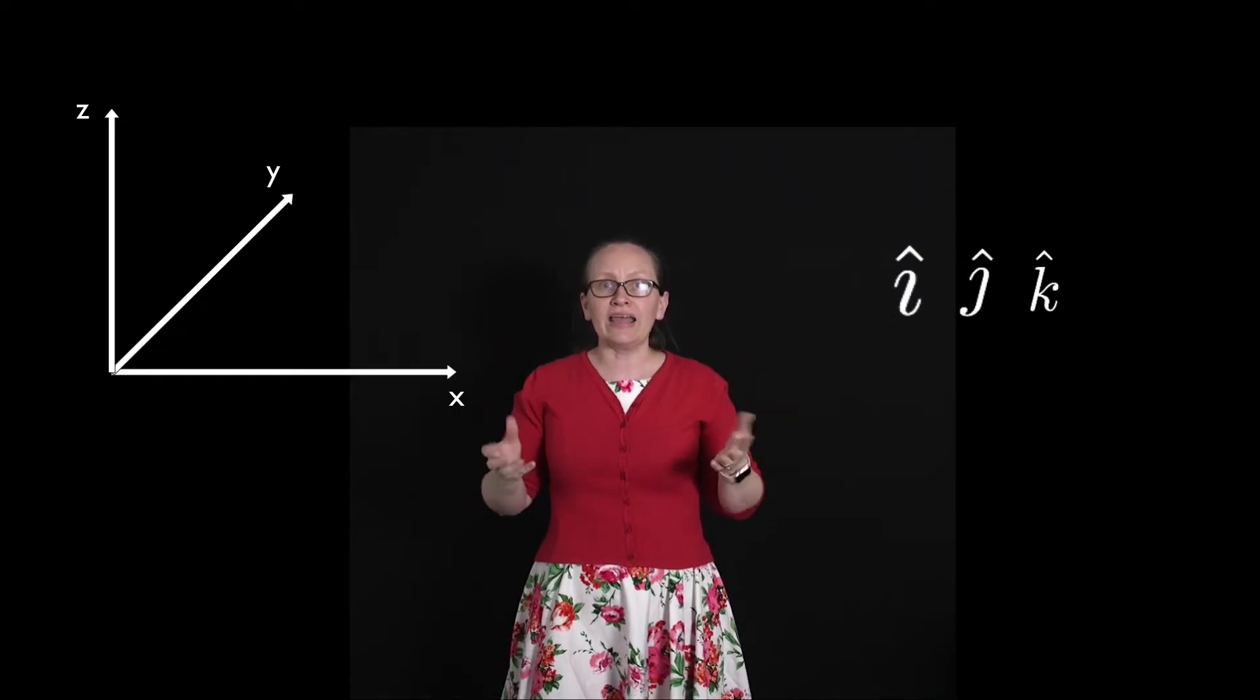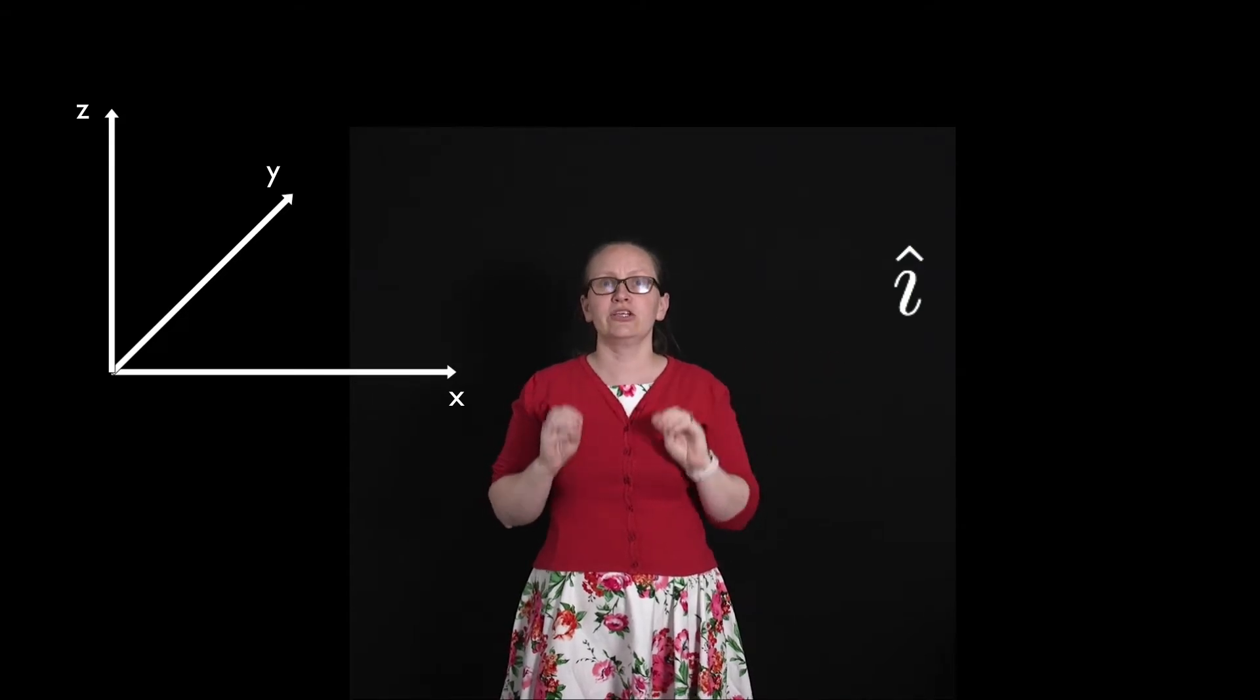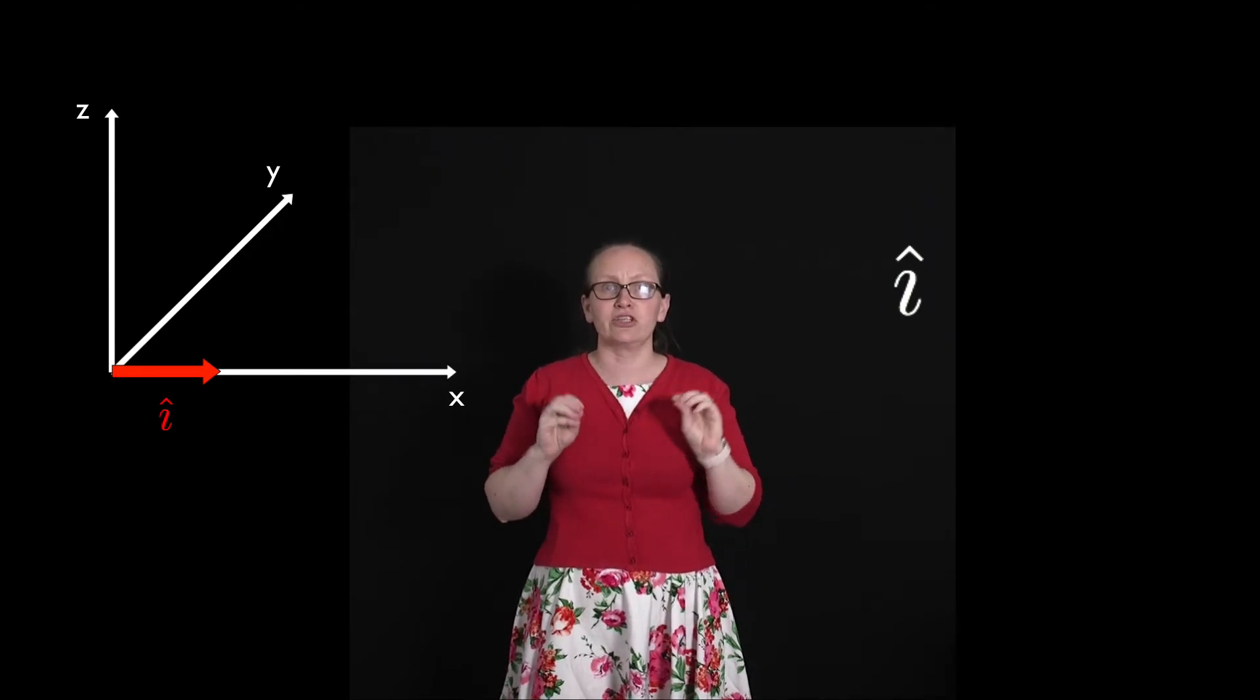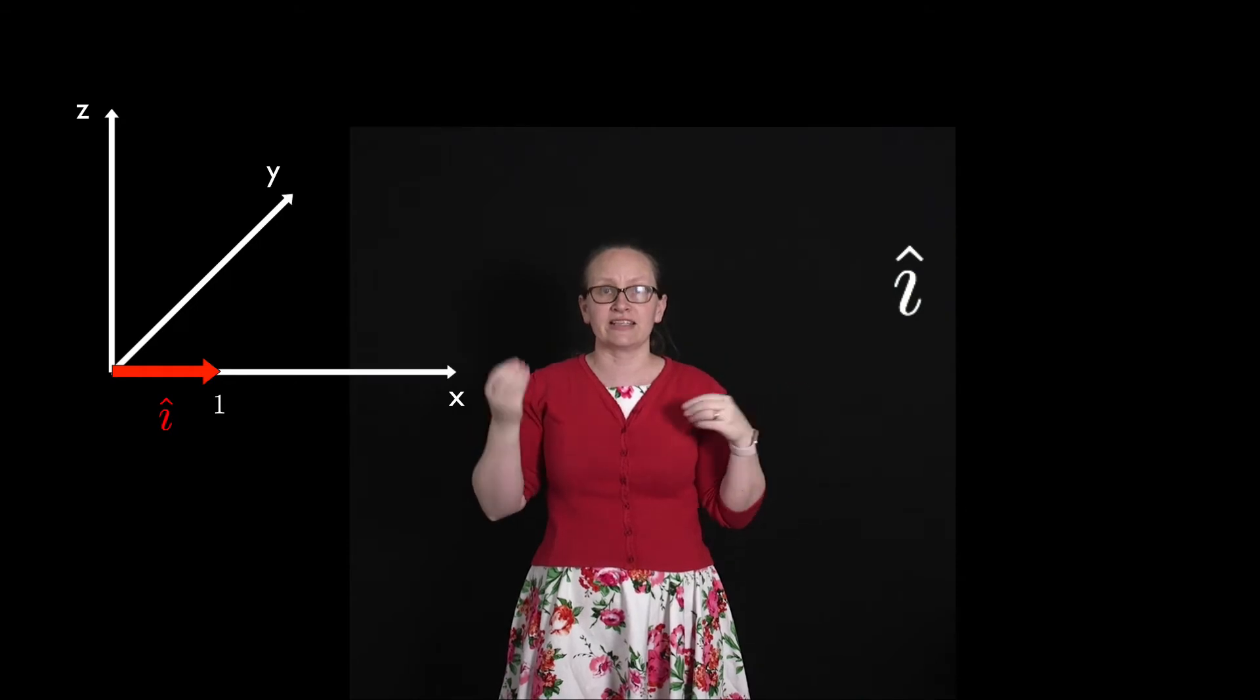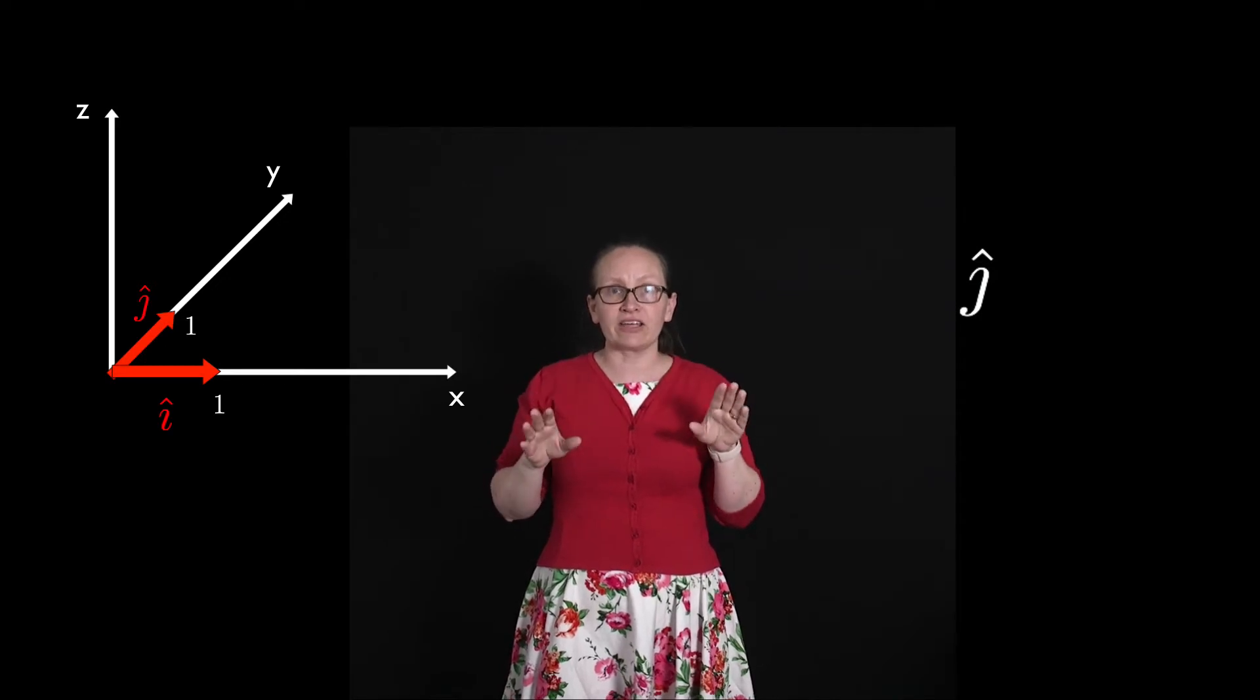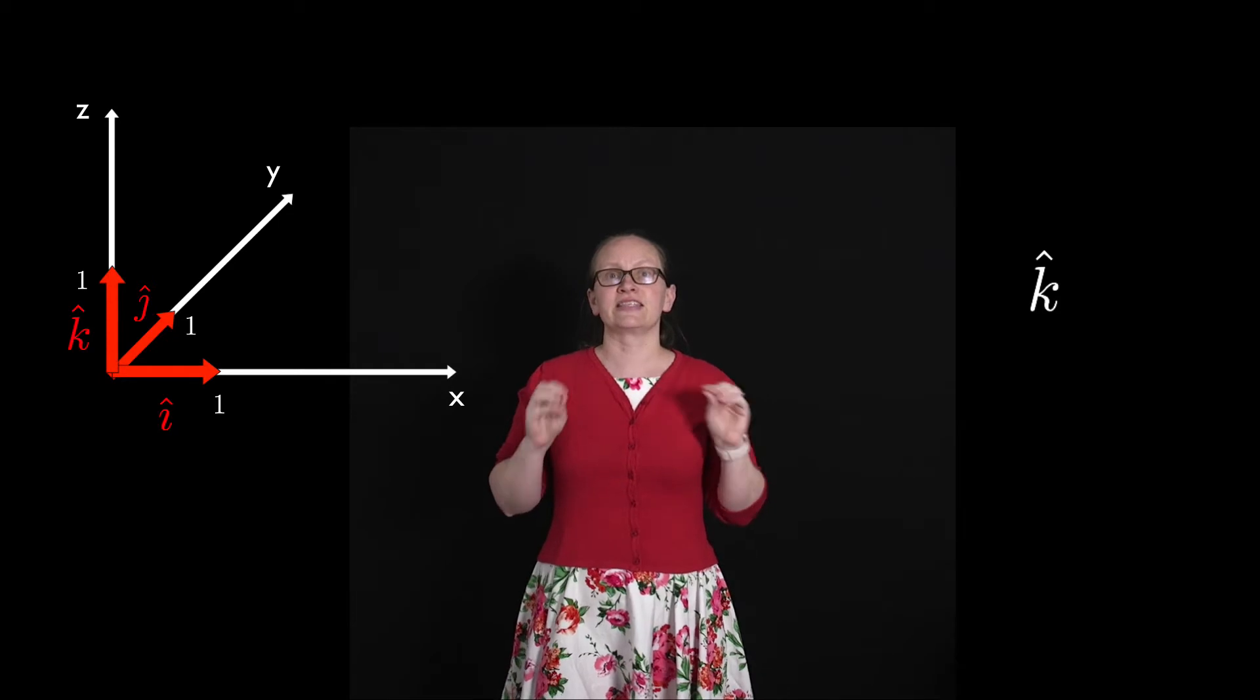So i, written this way with a little hat over the top, is a unit vector in the x direction. So a unit vector means that its magnitude is equal to 1 and its direction, as we've just said, is in the x direction. J is a unit vector in the y direction, and k is a unit vector in the z direction.